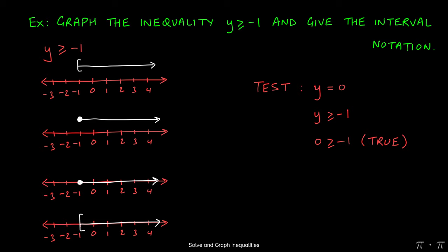For interval notation, remember that you always start from left to right. So we start at negative 1, but the difference between this and the previous problem is that here we are including negative 1. So we would start with a bracket around negative 1, comma, infinity.